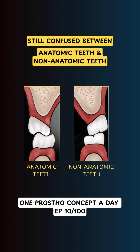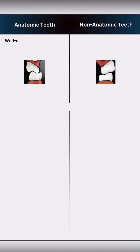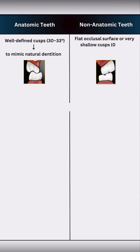Still confused between anatomic and non-anatomic teeth? Let's fix that in under 90 seconds. Anatomic teeth have well-defined cusp inclines, usually 30–33 degrees, to mimic natural dentition. Non-anatomic teeth are flat or shallow-cusped, about 0–10 degrees — they are essentially cusp-less teeth.